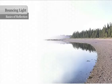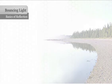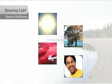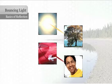Light bounces or reflects off of some surfaces. Sometimes you can even see an image on the surface of an object, such as when you see the reflection of a tree on the hood of a newly waxed car. This is because light bounces off the source of the image, then off the surface in which the image appears, and then into your eyes.